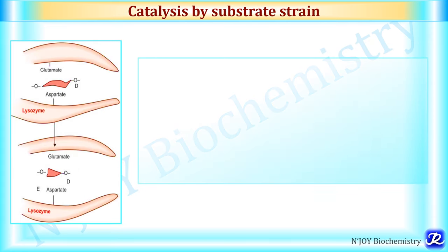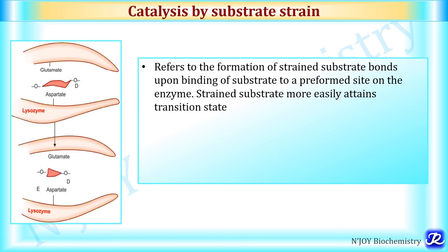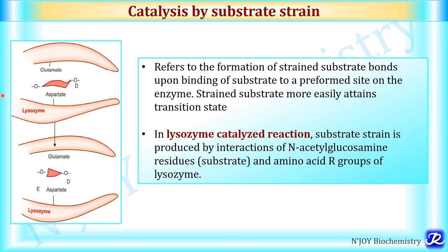Enzyme catalysis by substrate strain refers to the formation of strained substrate bonds upon binding of the substrate to a preformed site on the enzyme; the strained substrate more easily attains the transition state. In the lysozyme-catalyzed reaction, substrate strain is produced by interaction of N-acetylglucosamine residues of the substrate with amino acid R groups of lysozyme. Therefore, in the lysozyme-catalyzed reaction, enzyme catalysis occurs by three mechanisms: proximity and orientation, acid-base catalysis, and substrate strain catalysis.